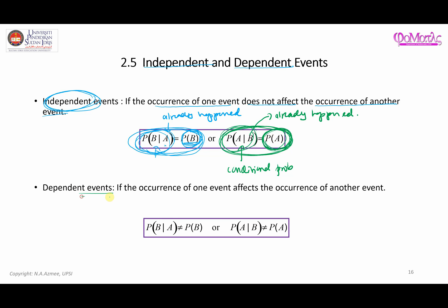For dependent events, when A is observed, the probability of B given A is not going to be similar to the original probability of getting B. That means when A happens, it alters the original probability of getting B, so P(B|A) is not equal to P(B).